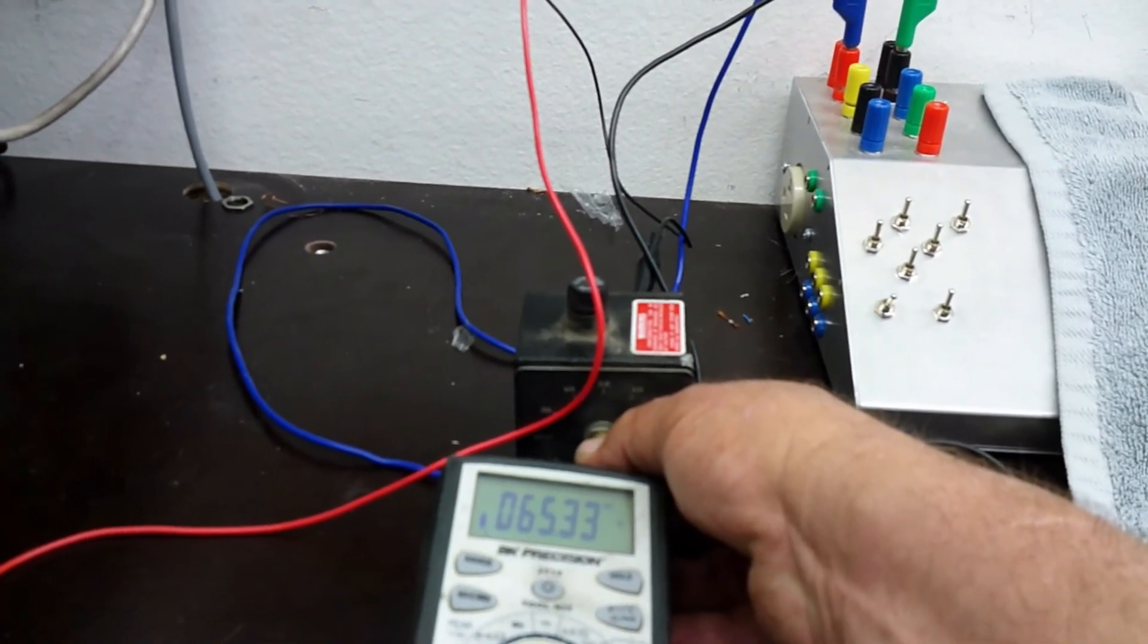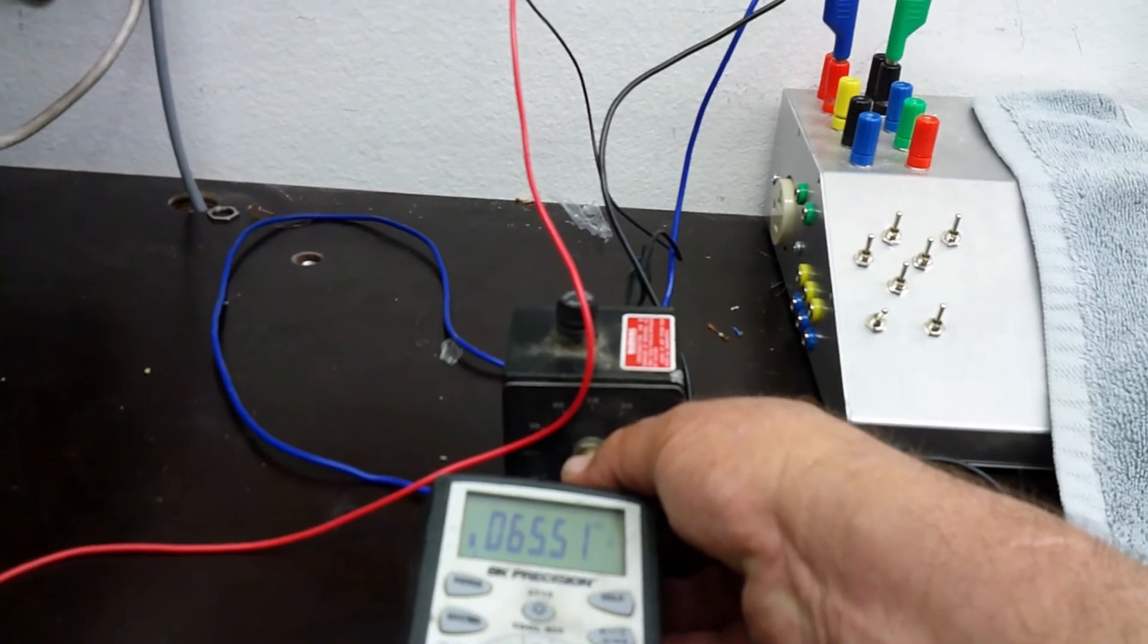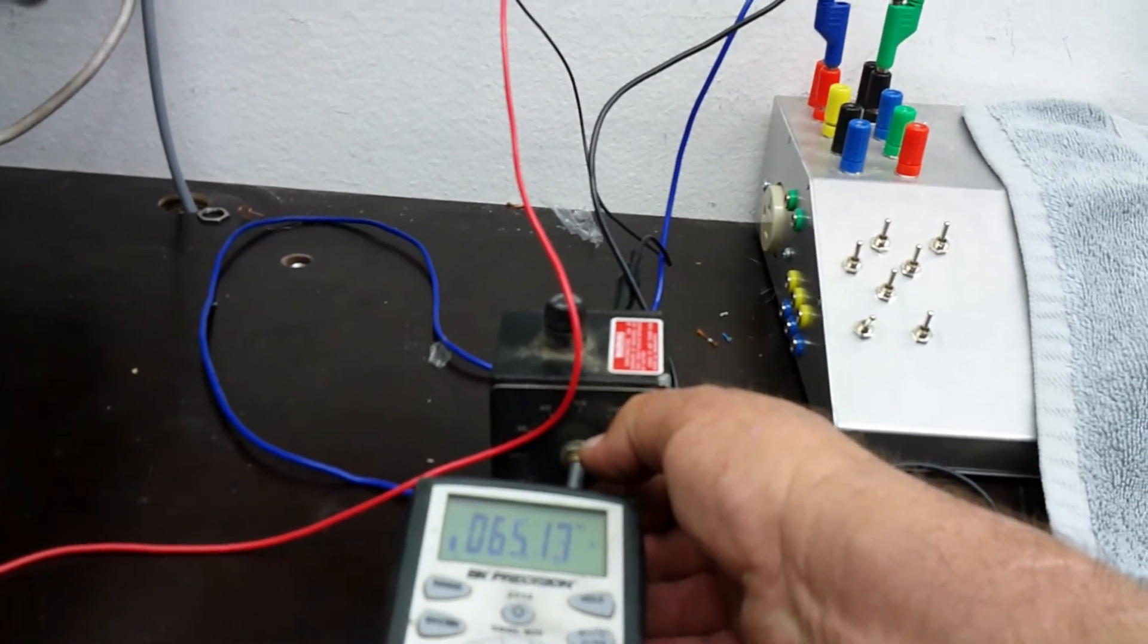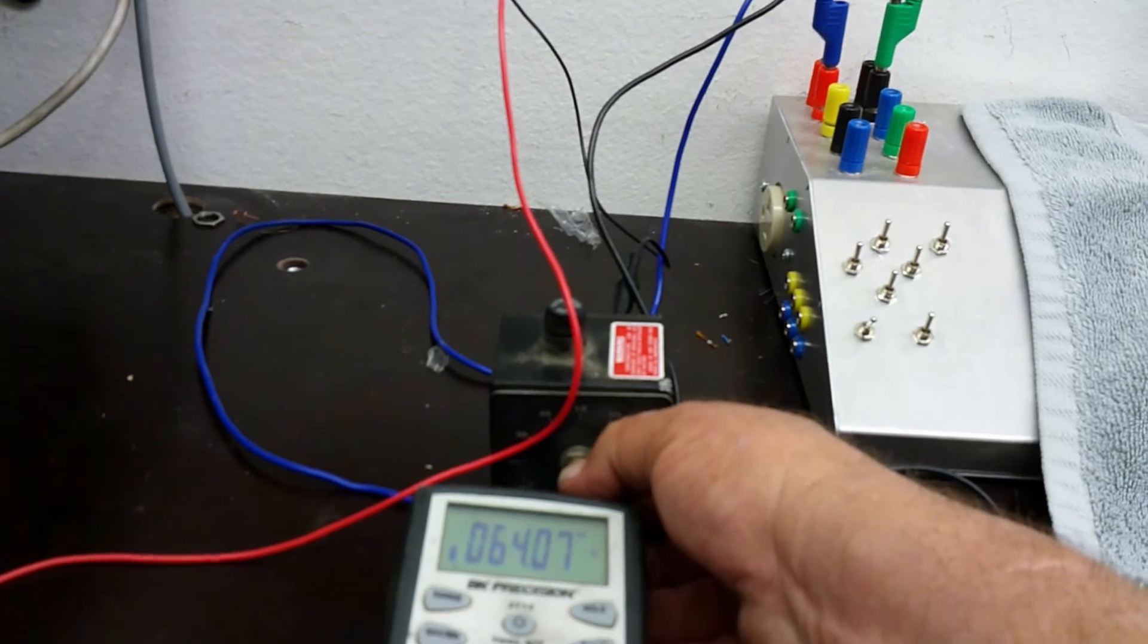We should have it about 65 volts, maybe 63. There it is. Now we can see it glowing. See it glowing pretty good.